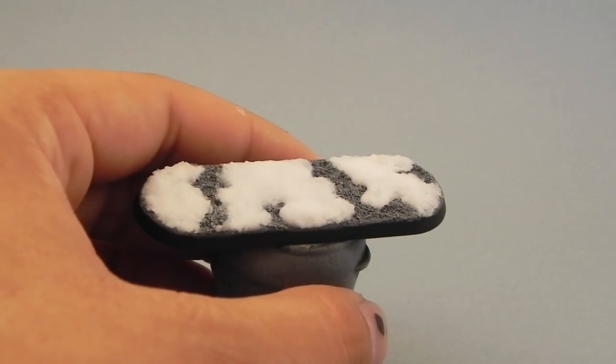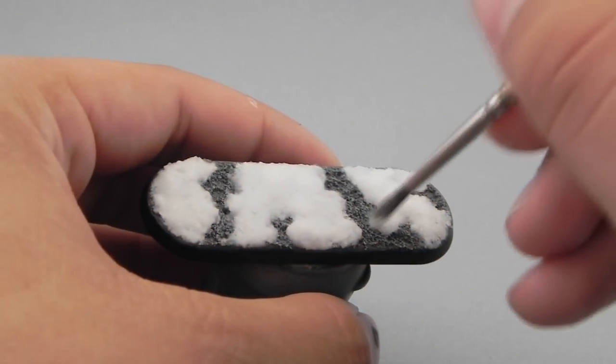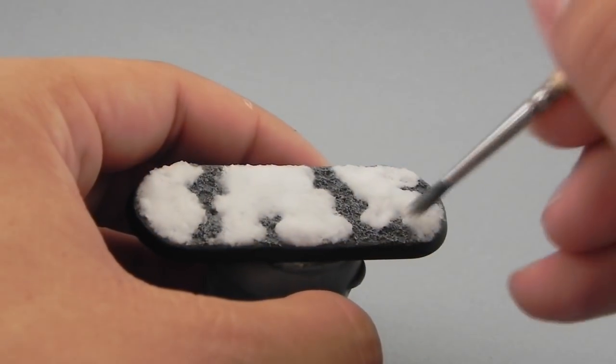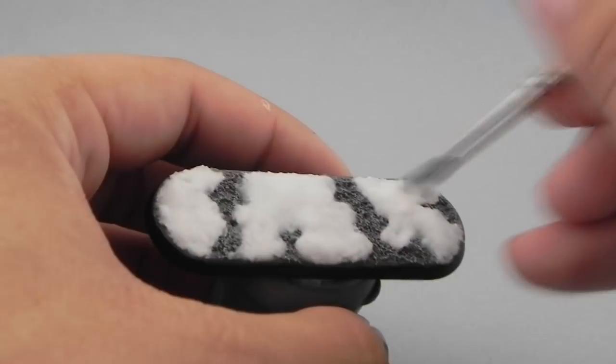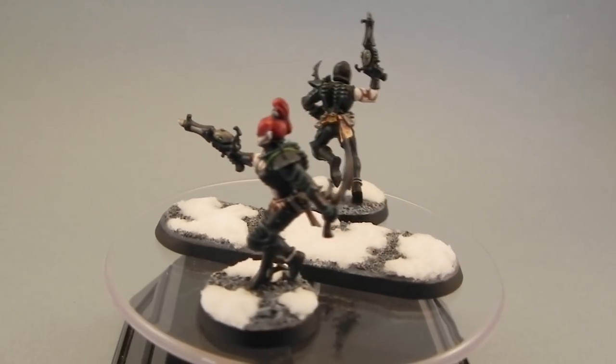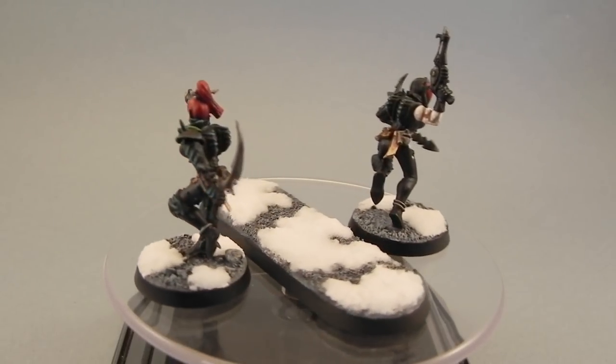To finish it off, I'm applying matte varnish to the whole snow once it's dry. Just to seal it in and to blend it a little bit, make it look a little better. And this is the finished result.